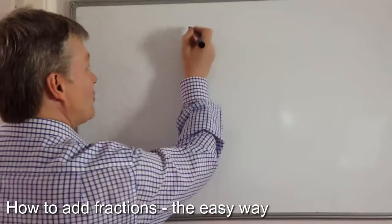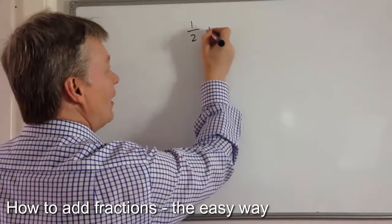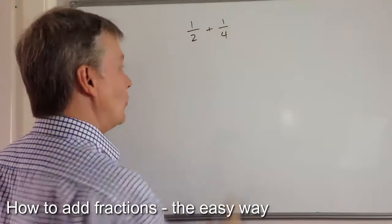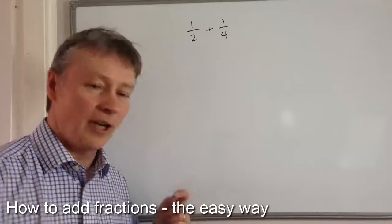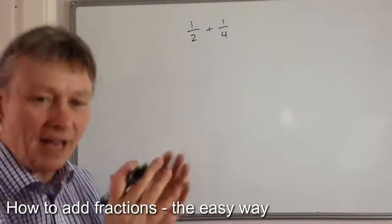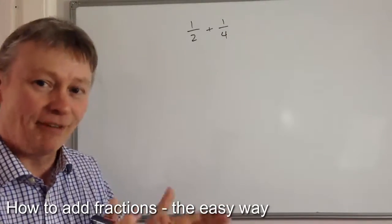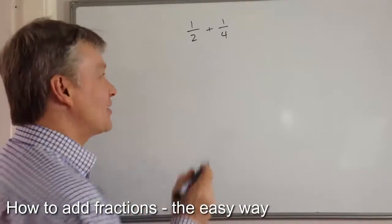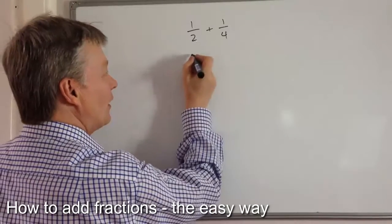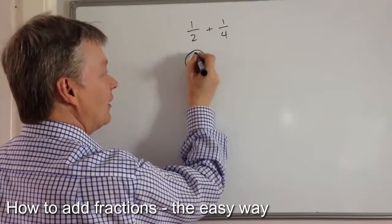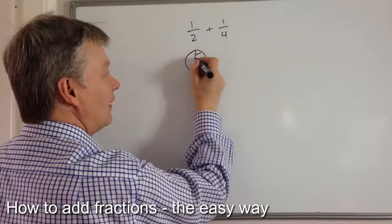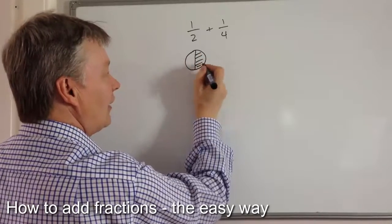So the first one is, let's look at something like a half plus a quarter. Well, there are a couple of ways you can do that. You can either imagine it — so what we're saying here is we've got a cake and we're going to cut that cake in half.